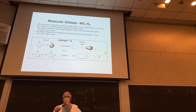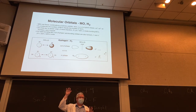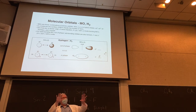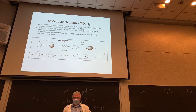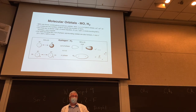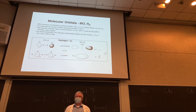This is the simplest example. We call this the highest occupied molecular orbital — the HOMO — and this is the lowest unoccupied molecular orbital, the LUMO. This is a very simple molecule, H₂.